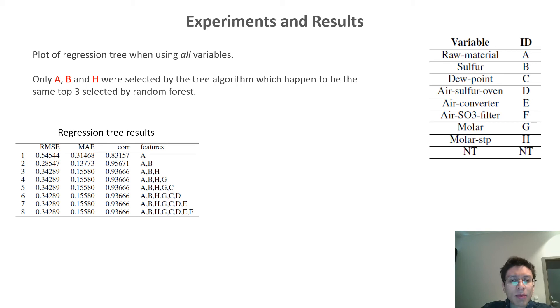One thing we noted with the regression tree is that after adding variable H, all the results remain the same, including the root mean squared error, the mean absolute error, and the correlation.